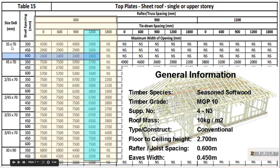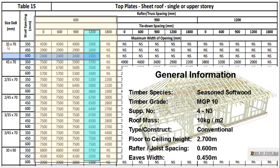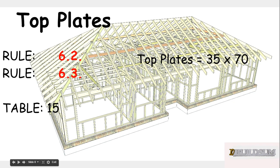You have to use a 70 by 35 mil top plate. That's how it works — even if our tie-down spacing was 600, 900, or even zero, it's not going to change. We're using a 35 by 70 mil member. The reason it's written that way is they always put the height first, so because the top plate is essentially on its flat, it's 35mm high and 70mm wide. So 35 by 70 is our top plate, and there we go — we've worked out the top plate size needed for this particular job.